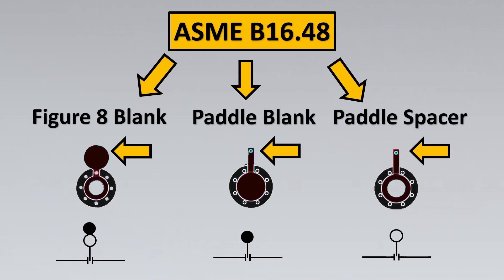But in paddle blank and paddle spacer, it is not that easy to identify which of it is put in the pipe. So is it whether it is going to be a solid or is it just hollow allowing the flow to pass through it.